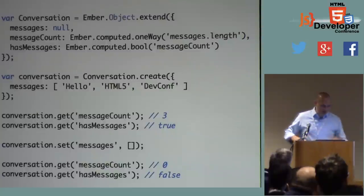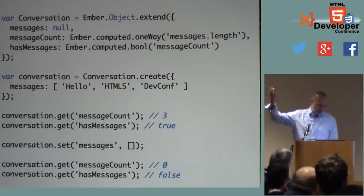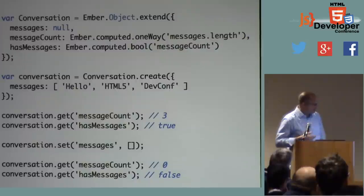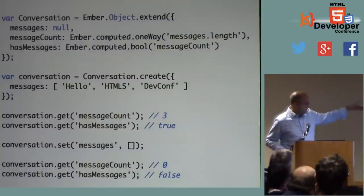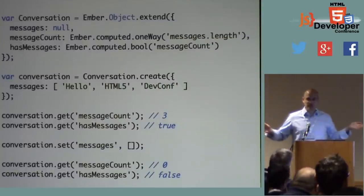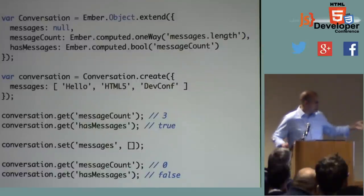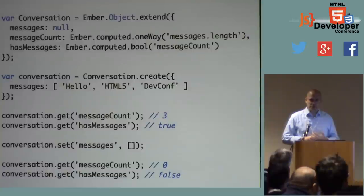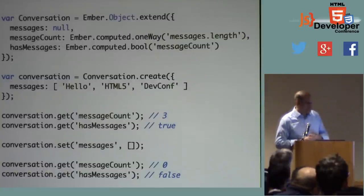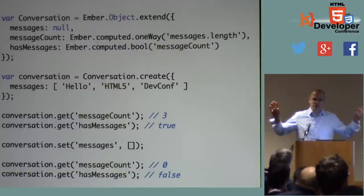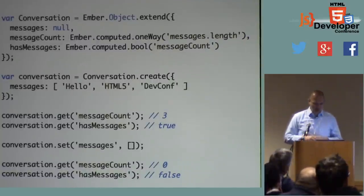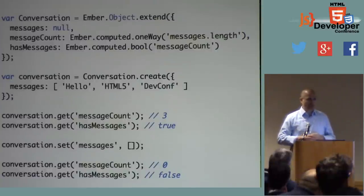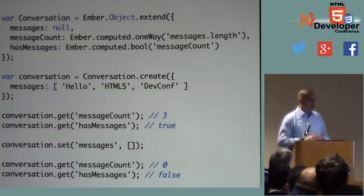In the example: var conversation is conversation.create, initialized with an array of three messages. Conversation.get message count is three; conversation.get has messages is true. Then we completely wipe the array — conversation.set messages to empty array. Now message count is zero and has messages is false.